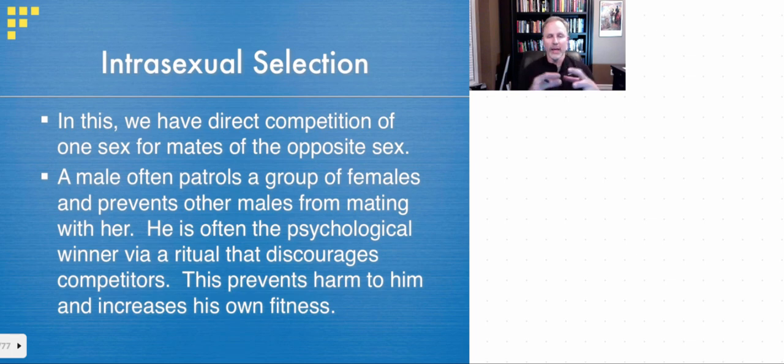Now with intra, this is direct competition of one sex for mates of the opposite sex. So intras within, so like intramural, these are sports in college that you might play within the college itself versus intercollegiate would be kind of between different schools. And we'll talk about that here in a second. So the intra-sexual selection, this is where, for instance, a male is patrolling a group of females like the lion, for instance, and he's preventing any other male from mating. Rams is another example and so forth.